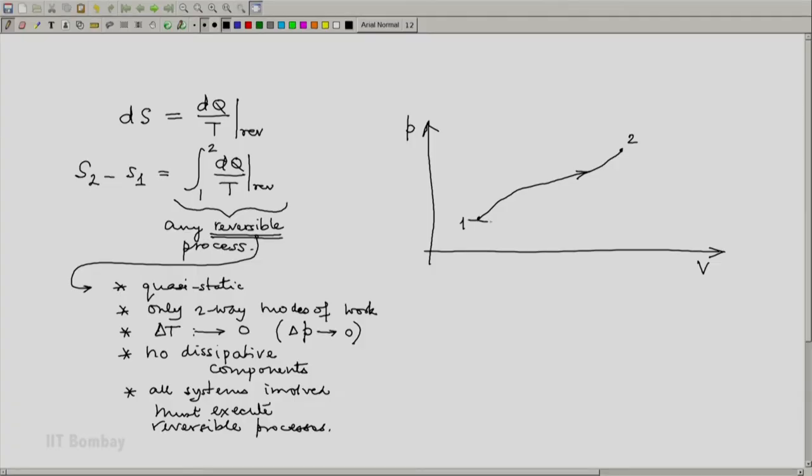For example, we could consider an isobaric line from p and a constant volume line from v and we can decide that perhaps 1-a-2 will go along this constant pressure followed by constant volume.